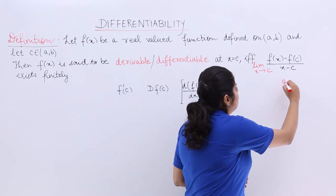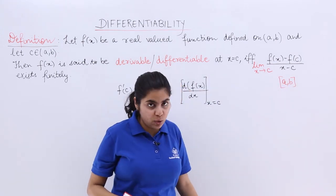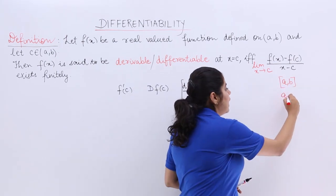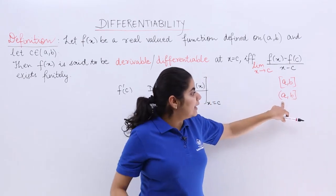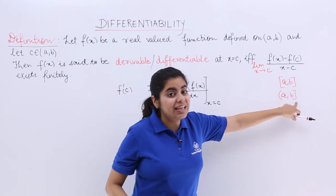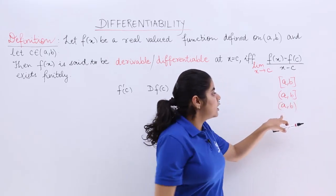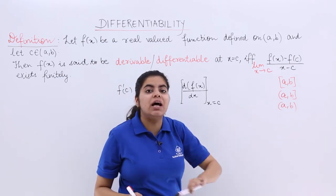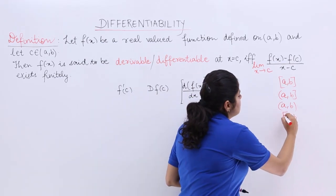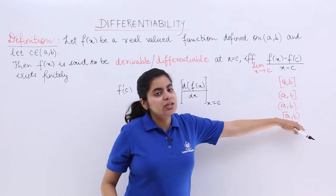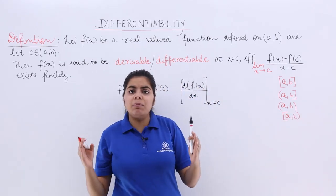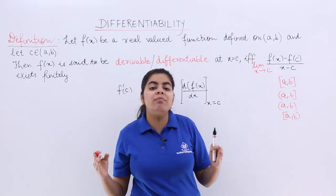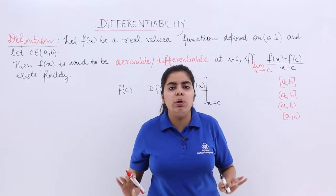If I write the closed interval [a, b], it means both a and b are also included. If I write (a, b], it means a is not included but b is included. If I write (a, b), both are not included. If I write [a, b), a is included but b is not. The interval between them is always included.